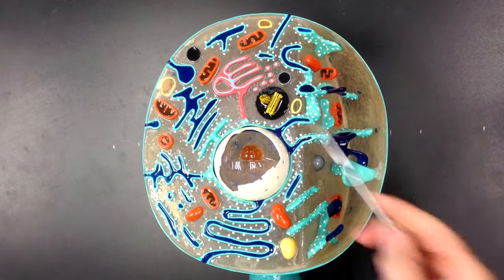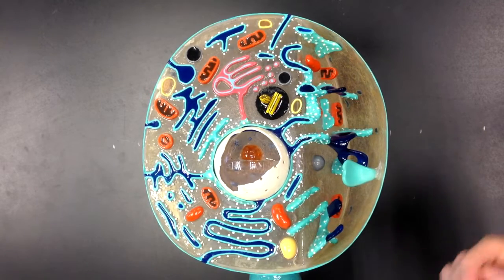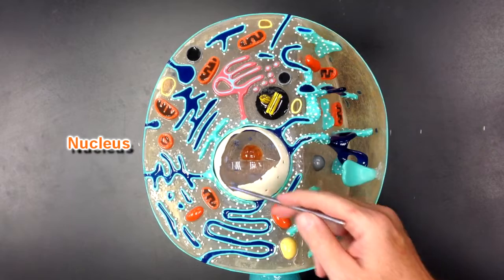What we're looking at here is a model of a typical animal cell. Some of the structures we can see on this model, we can see the nucleus right here.